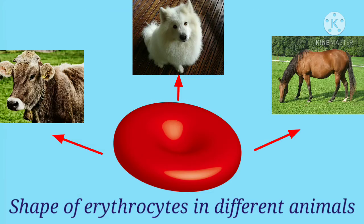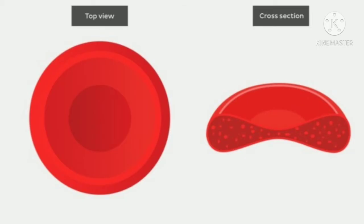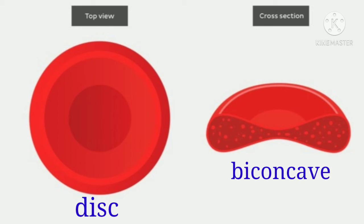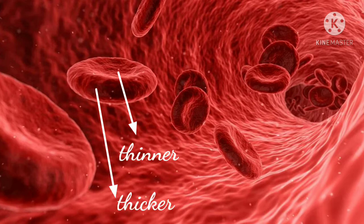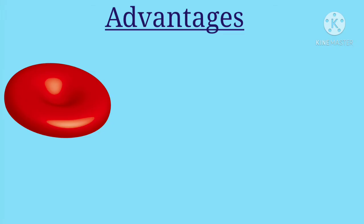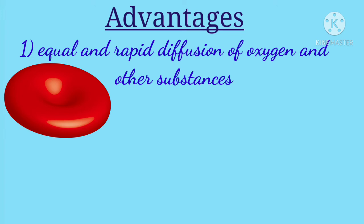Let's study about the shape of erythrocytes in different animals. Normally, the RBCs are disc-shaped and biconcave, i.e. dumbbell shape, in which the central portion is thinner and periphery is thicker. The advantages of biconcave shape of RBCs: first, biconcave shape helps in equal and rapid diffusion of oxygen and other substances into the interior of the cells.